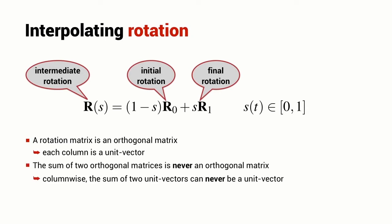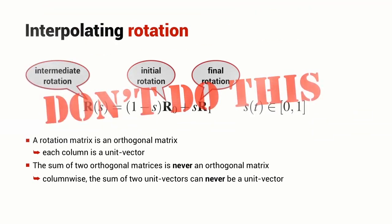So if I add two orthogonal matrices, the result will never be an orthogonal matrix because if I consider each column, the sum of two unit vectors can never be a unit vector. So this is not a strategy we can use to interpolate rotations.